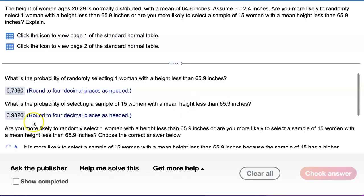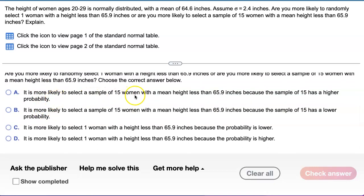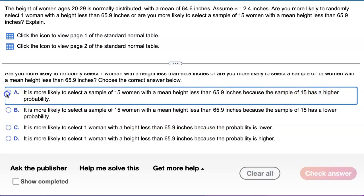So which one is more likely to happen? Well, getting a sample average from 15 women that is higher than 65.9 inches because 98% is higher than 70%. So it is more likely to select a sample of 15 women with a height less than 65.9 inches because a sample of 15 has higher probability.